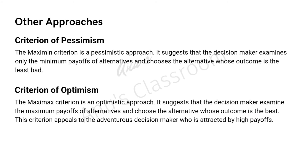A few other approaches used when probabilities of outcomes are unknown include the criterion of pessimism, also called the maximin criterion. The decision maker examines only the minimum payoffs of alternatives and chooses the alternative whose outcome is the least bad. For example, if you are a very conservative investor with 1 lakh rupees and the options are share markets, FD, mutual funds, and ULIPs — if you follow the criterion of pessimism, you will put your money in FD. Why? Because even if the bank dissolves, as per RBI mandate you will get your 1 lakh rupees back. Choosing FD in such a case is employing the criterion of pessimism.